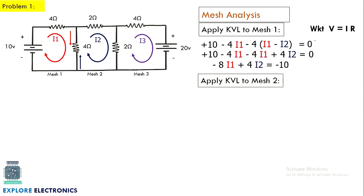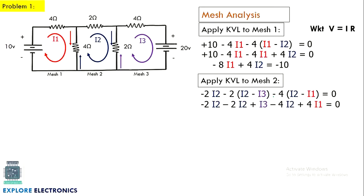Applying KVL to mesh 2: there is no voltage source, only three resistors with voltage drops. The 2-ohm resistor gives minus 2·I2; the shared resistor with mesh 3 gives minus 2·(I2 − I3); and the shared 4-ohm resistor with mesh 1 gives minus 4·(I2 − I1). Multiplying and rearranging, the expression becomes: 4·I1 minus 8·I2 plus 2·I3 equals 0. This is equation 2.